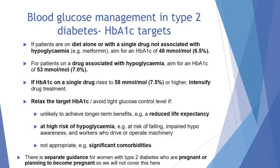For patients managed by lifestyle and diet alone, or combined with a single drug not associated with hypoglycaemia, we should aim for an HbA1c level of 48 mmol/mol or 6.5%. For patients on a drug associated with hypoglycaemia, we should aim for 53 mmol/mol or 7%. If HbA1c levels on a single drug rise to 58 mmol/mol or 7.5% or higher, we will need to intensify the drug treatment.